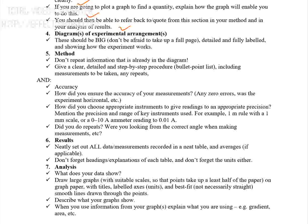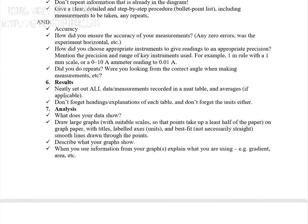In the method section, give clear, step-by-step procedures without repeating information already shown in diagrams. Explain how you ensured accuracy — for example, checking for zero error, ensuring the experiment is horizontal, and choosing appropriate instruments with suitable precision and range. Mention key instrument precision and range, for example a one-meter ruler with millimeter scale, or an ammeter reading from 0 to 10 A. State whether you repeated measurements or changed the hypothesis.